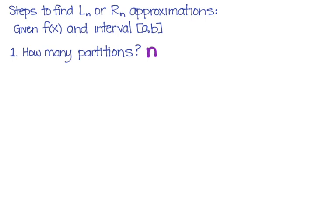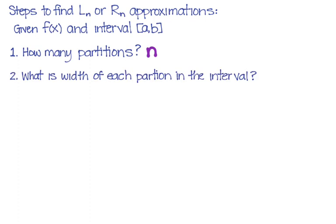So now we have to figure out the width of each one of our partitions. So to find the width of each of our partitions, that's your delta X. And so your delta X, meaning the width of your partition, is the interval B minus A divided by the number of partitions. And that will give you how wide each of the rectangular areas we're going to find are.